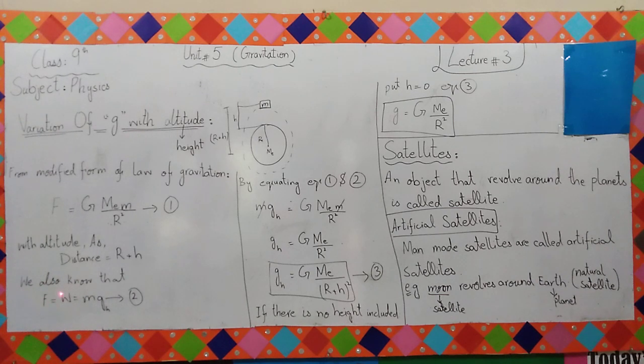Next, you have specified form of gravitation law. F is equal to w, and w is equal to mgh. Now why are you talking about h? Because here is height. If height is included, then you will add small g, or you will write simple mg. That is your equation number 2.